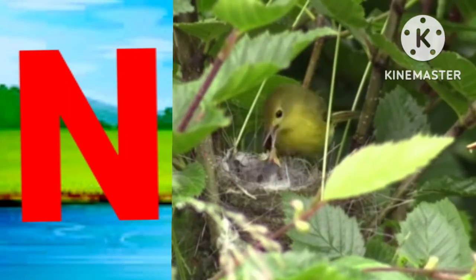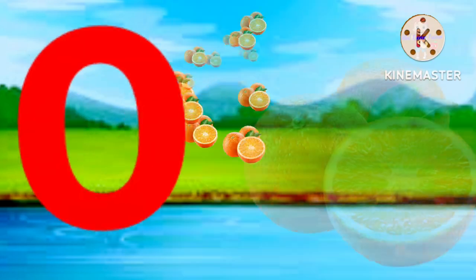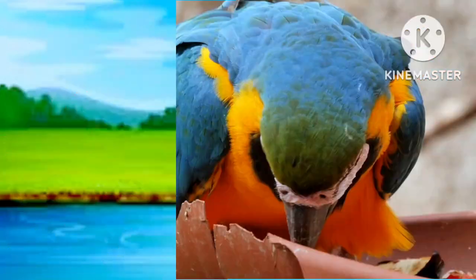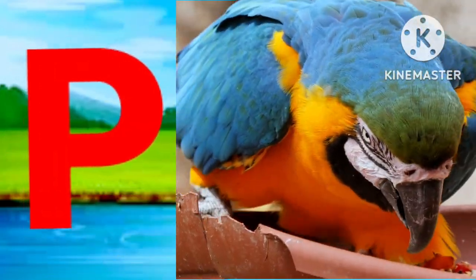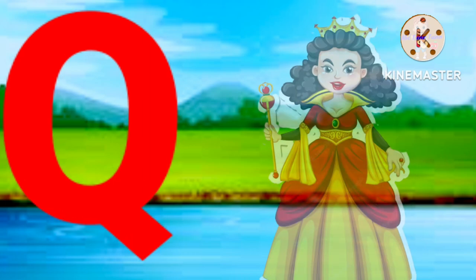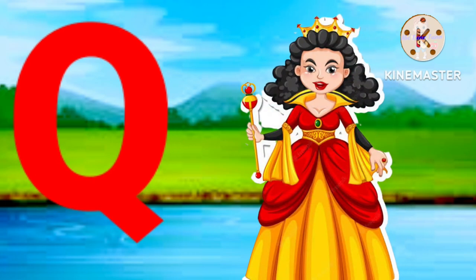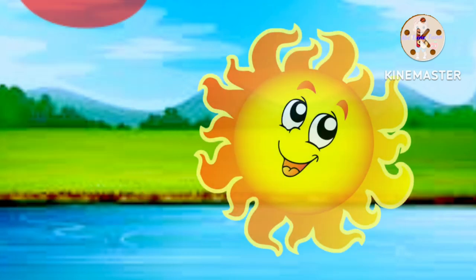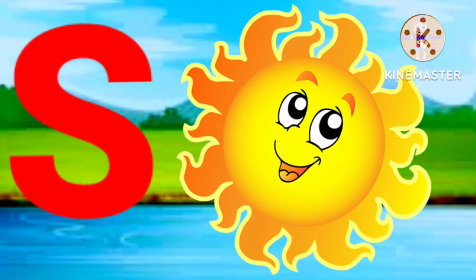N for nest, O for orange, P for parrot, Q for queen, R for rat, S for sun.